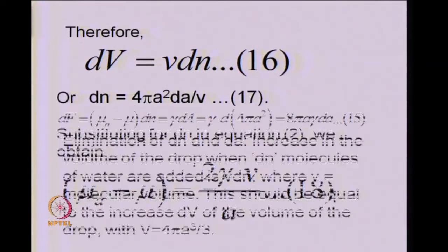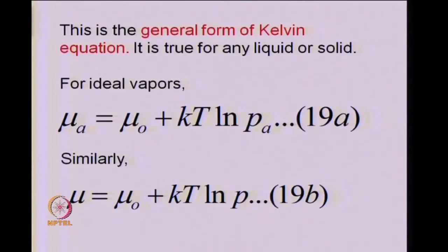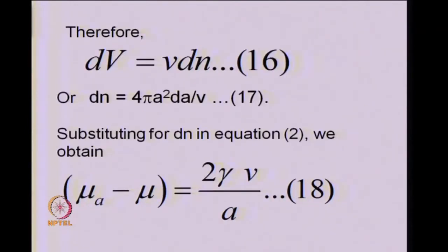Substituting into the equation and simplifying, we get mu_a − mu = 2γv/a. This bears out our anticipation that mu_a is greater than mu. Surface tension is positive, molecular volume v and radius a are all positive quantities, so the right-hand side is positive. This is the general form of the Kelvin equation: mu_a − mu = 2γv/a.